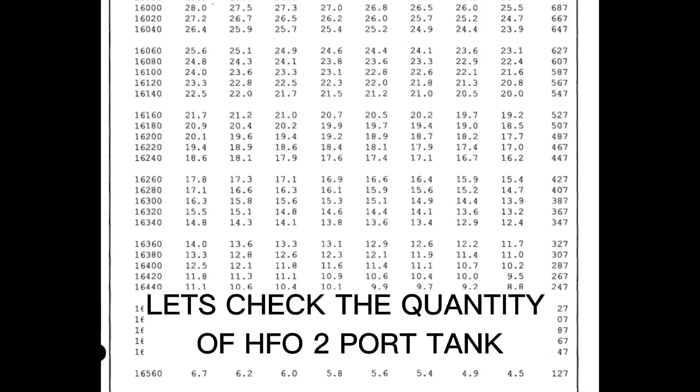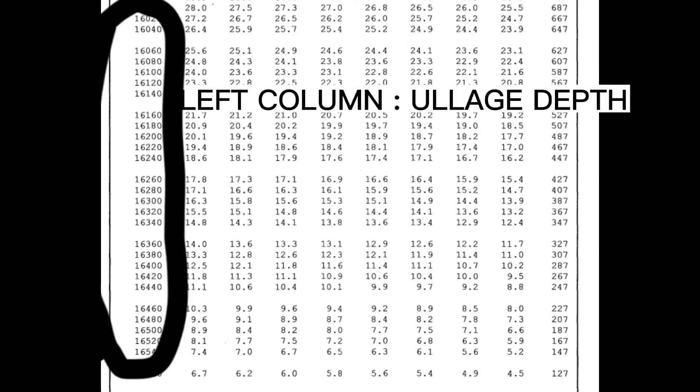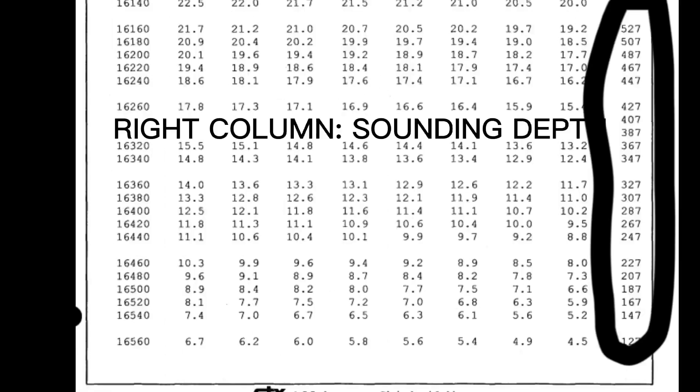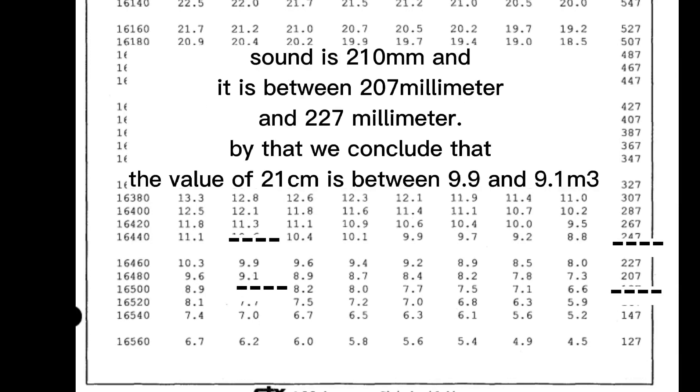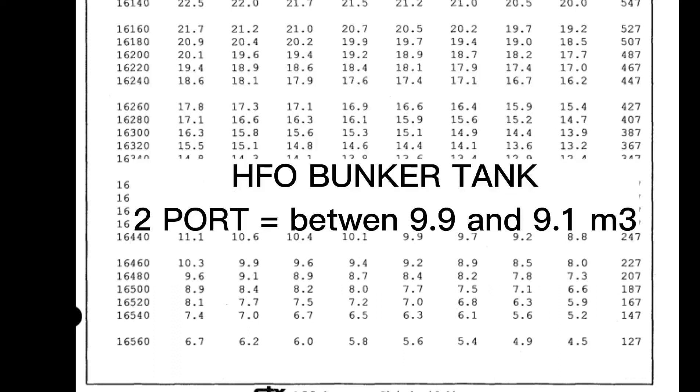Let's check the quantity of HFO 2 port tank. Left column ullage depth, right column sounding depth. Sounding HFO 2 port tank equals 21 centimeter. Sound is 210 millimeters and it is between 207 millimeter and 227 millimeter. By that we conclude that the value of 21 centimeters is between 9.9 and 9.1 cubic meters. HFO bunker tank 2 port equals between 9.9 and 9.1 cubic meters.